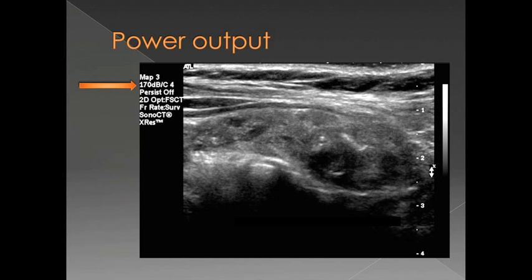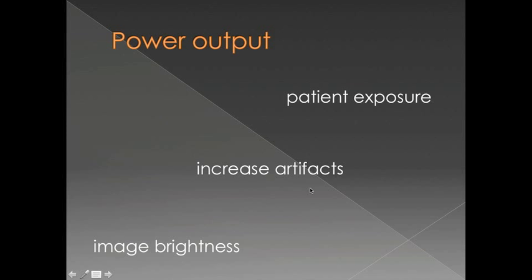Power output is essentially the amplitude or strength of the sound waves that are being sent out from the transducer. Most of the modern ultrasound machines are going to set this for you automatically, but just to let you know that this is something that you can set on some machines, and that if you do increase the power output, you can increase patient exposure, you can increase artifacts, and also this is another way to increase the brightness of the image, because if you send out larger, stronger pulses, you're going to be getting back larger echoes.